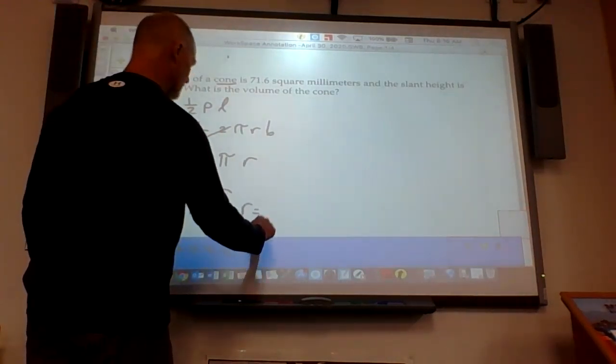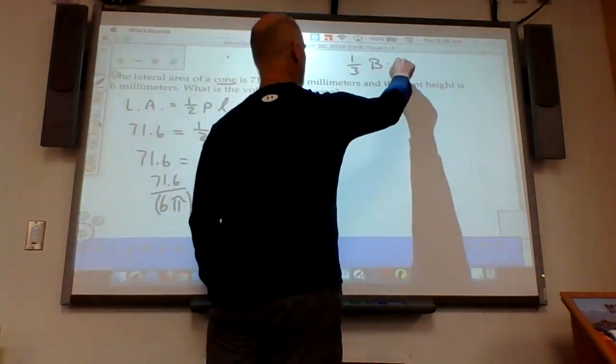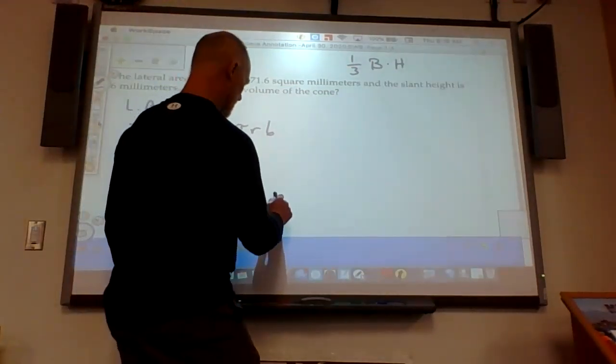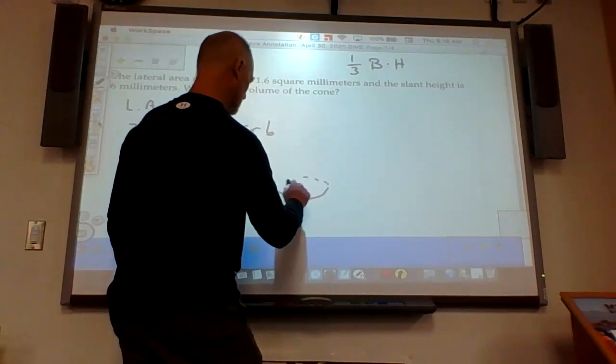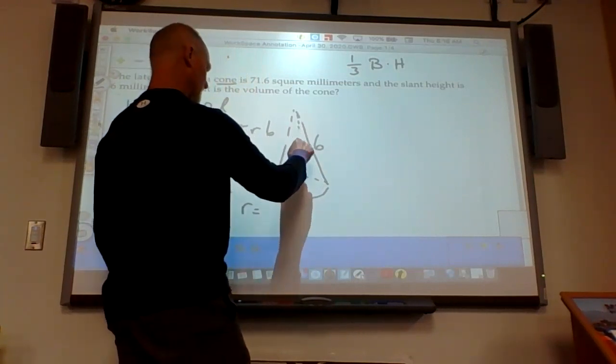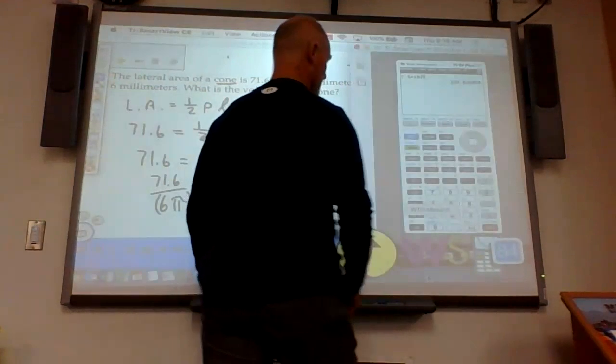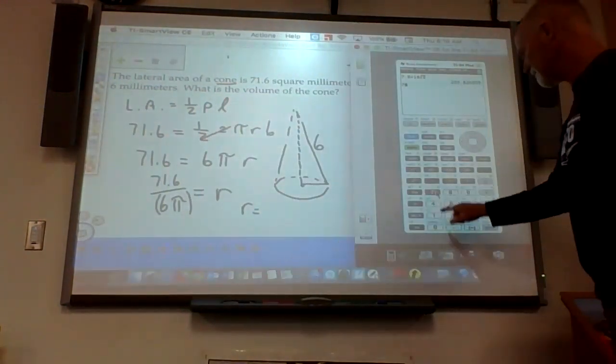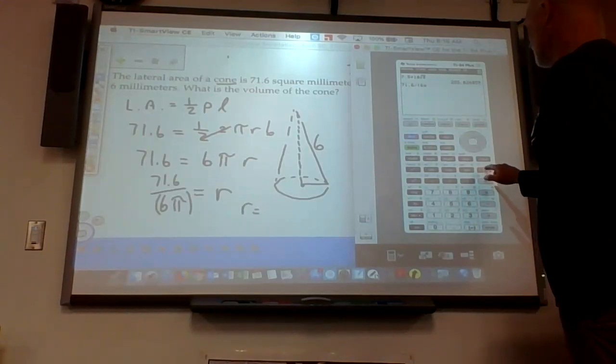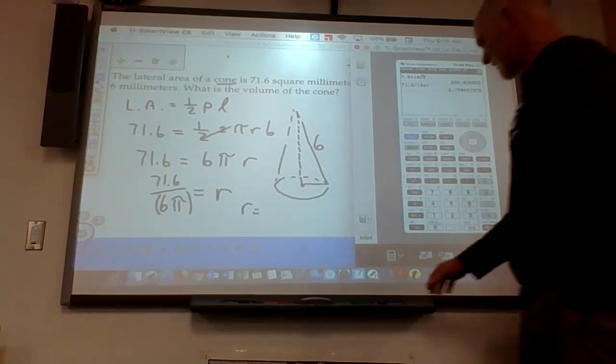So our radius is equal to, so we're finding the volume. So we know that we're one-third base area times the height. Well, we don't have now the height. We have the slant height. So again, we're going to need to draw a circle for a base of a cone. That's going to look like this. This is 6. We're looking for this value right here. I use my calculator. I'm going to go 71.6 divided by, now I need to put parentheses, 6, and then times pi. Close the parentheses. And there's my answer, 3.798. We're going to say 3.8.